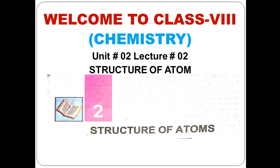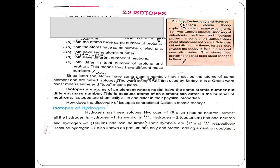Our topic is isotopes. Define isotopes of an element: isotopes are atoms of an element whose nuclei have the same atomic number but different mass number. This is because atoms of an element can differ in the number of neutrons — such atoms are called isotopes.